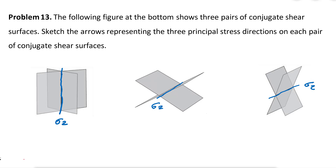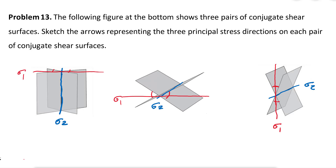There are two types of angles between the two conjugate fractures. We have the acute angle — one on each side — and we can draw a line that bisects this acute angle. That bisector of the acute angle is always going to be Sigma 1.